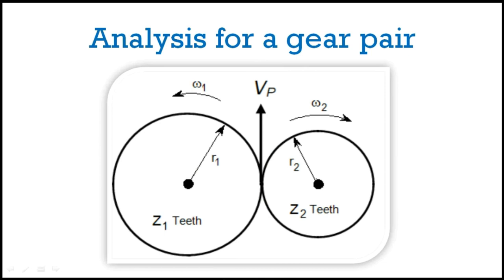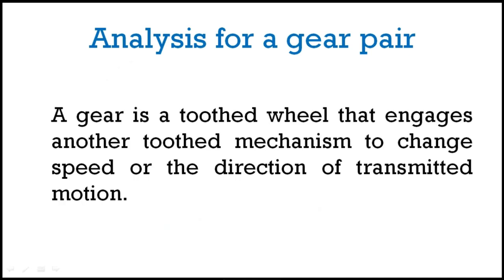The point where the two pitch circles are in contact is called the pitch point. Consider gear one having a pitch circle radius r1, consisting of z1 teeth, rotating with angular velocity omega-1, engaged with a pinion. Generally, the smaller one is considered the pinion and the larger one is the gear wheel. The pinion is driven in the opposite sense with angular velocity omega-2. A gear is a toothed wheel that engages another toothed mechanism to change the speed or direction of transmitted motion.